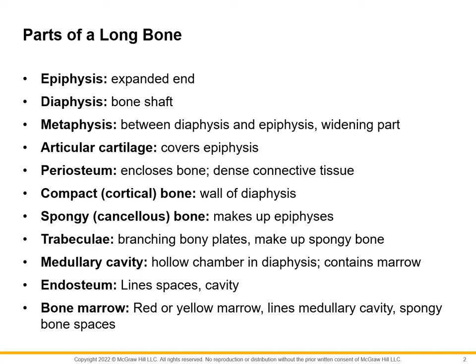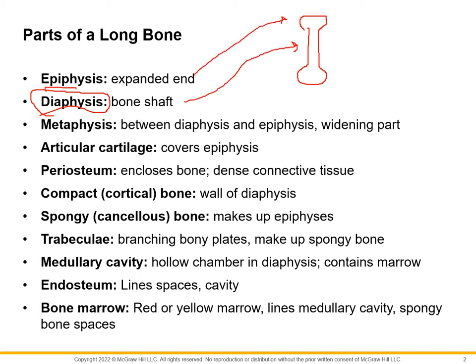The hardened middle shaft is called the diaphysis, and the expanded ends are called the epiphysis. If I draw a little milk bone, the diaphysis is this hardened middle shaft and the epiphyses are either end. There is a little area between the two called the metaphysis, which is where the epiphyseal plate — the growth plate — is located, but we're not too worried about the metaphysis right now.